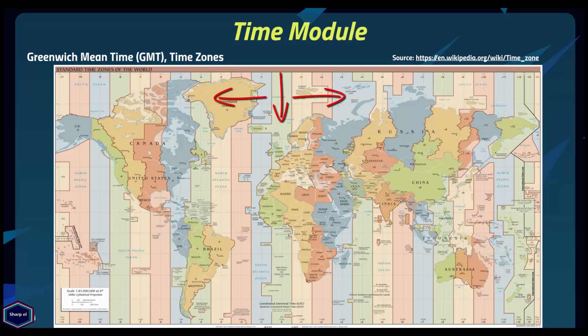As we know, Earth rotates from west to east at approximately 15 degrees per hour. So if it's 12 noon in Greenwich, the difference in time at 15 degrees east or west will be plus or minus 1 hour. Earth is therefore divided into different time zones, and each time zone is 15 degrees of longitude wide. Today we have more than 24 time zones because some time zones are only 30 or 45 minutes apart.